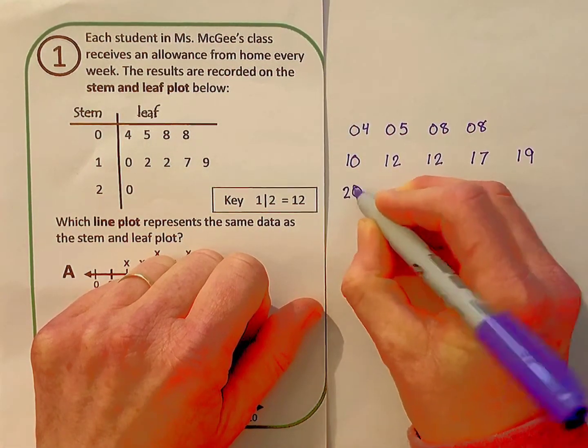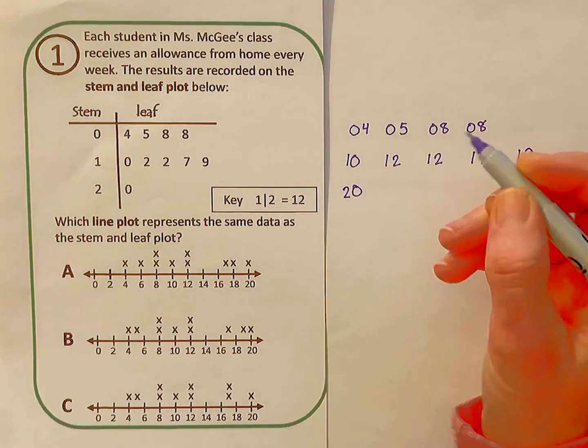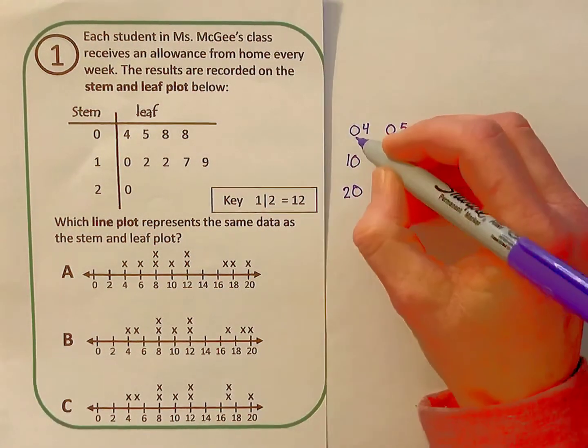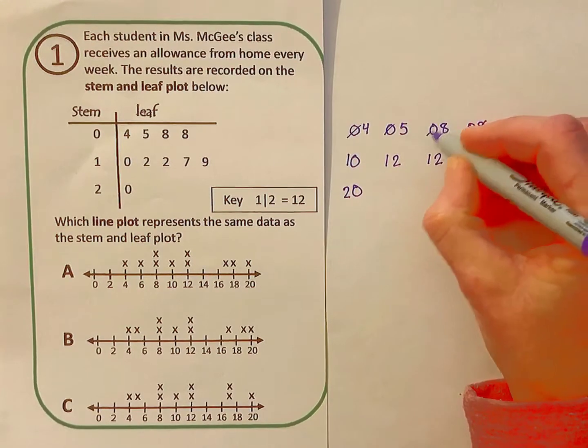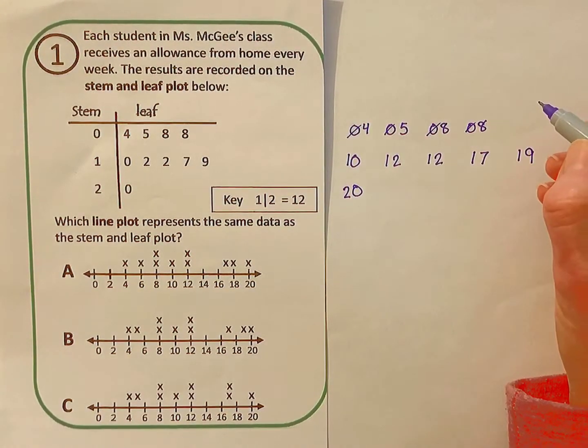The bottom row has a stem of 2 and a leaf of 0. Now I'll go back just for clarity and cross off the zeros. The numbers are actually 4, 5, 8, and 8.